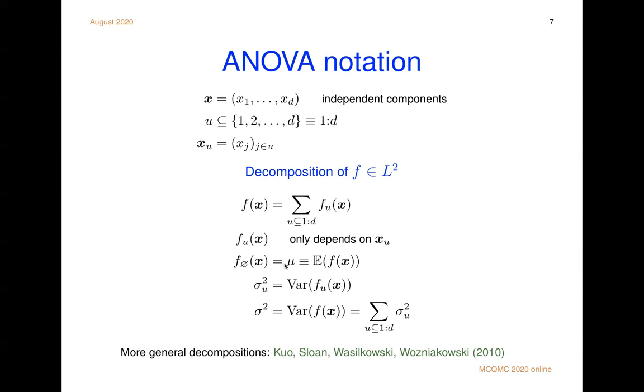Now all of these effects have variances, and because it's in L2, we call these variance components. And one good reason to call them variance components is that the variance of the function f of x is the sum of those variance components that decomposes. This is just one decomposition, there's an anchor decomposition, and some quite general decompositions are discussed in this paper by Kuo, Sloan, Wasilkowski, and Wozniakowski.